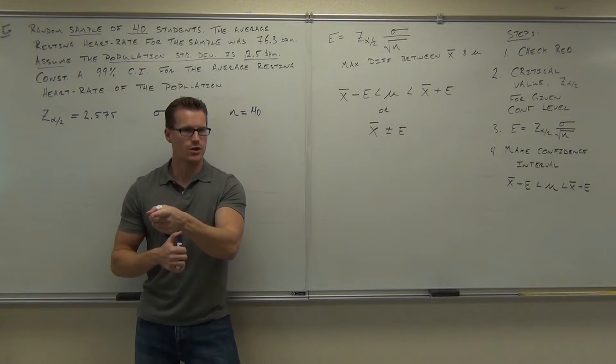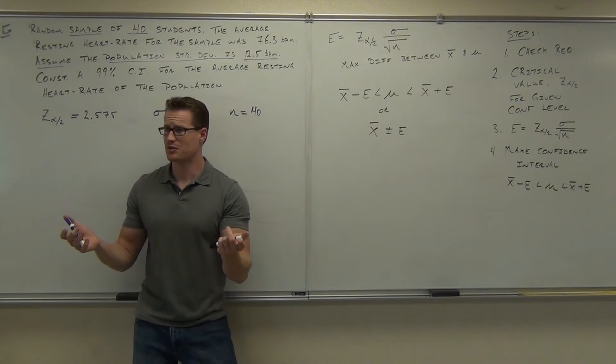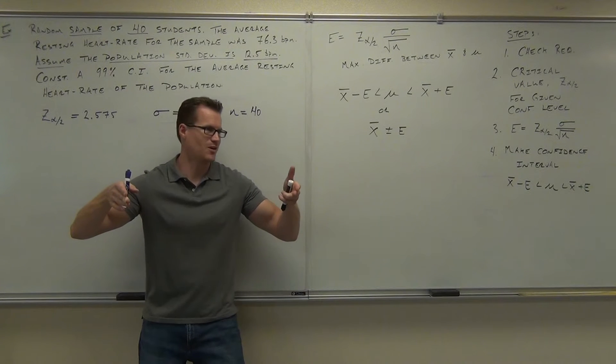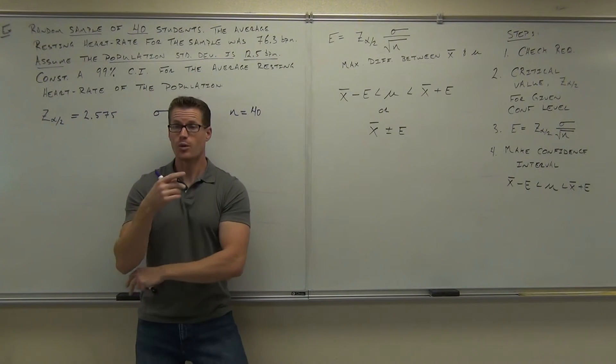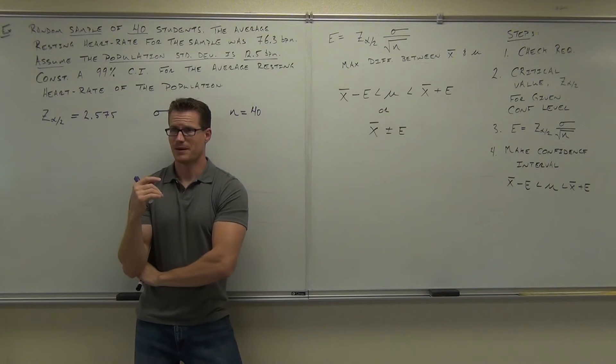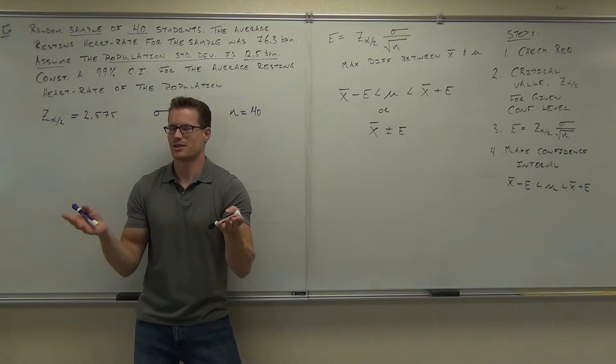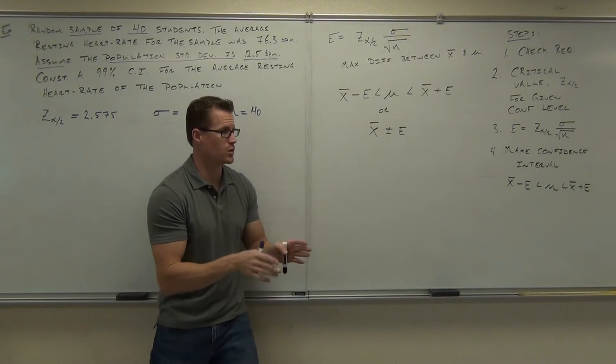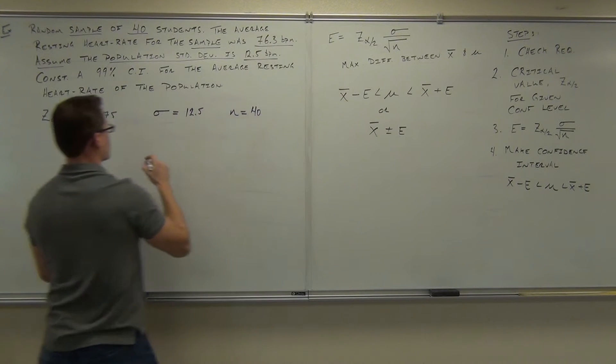Are we ever going to know mu? No. If we knew mu, we wouldn't even have to do the problem, right? Because we're actually trying to estimate mu. So if you knew mu, why would you even do this? You'd be like, oh, the mu is 30. I'm 95% confident it falls between, well, yeah, you're 100% confident. You already know mu. Why would you even do this problem? So you're never going to know mu. You are going to know x bar.